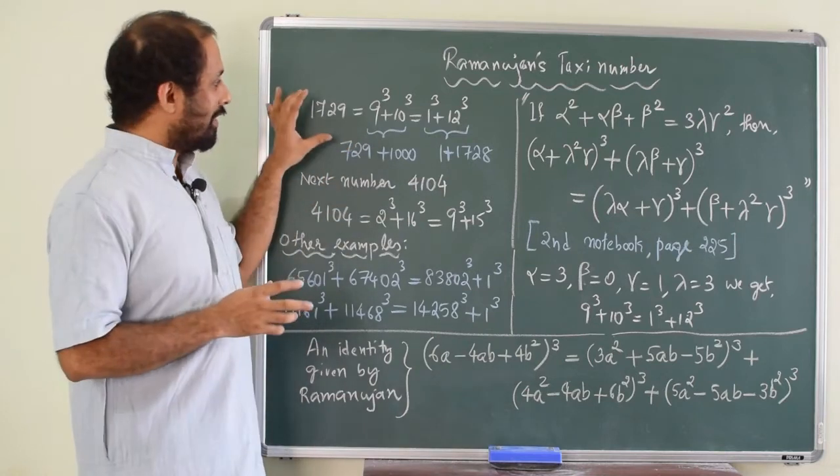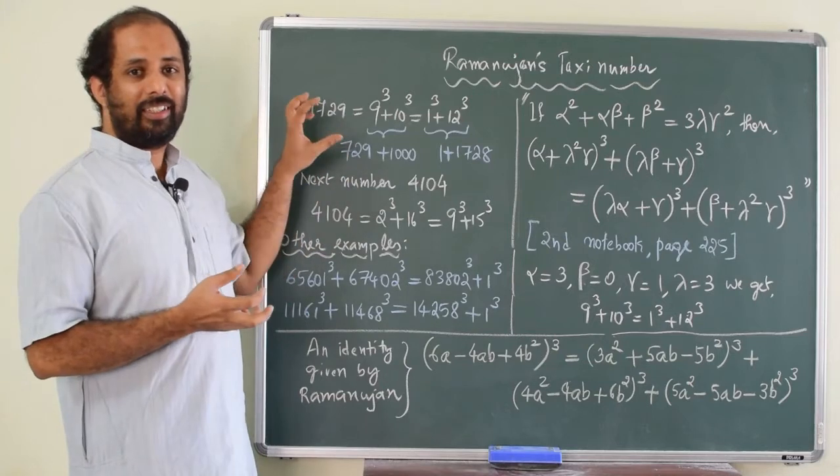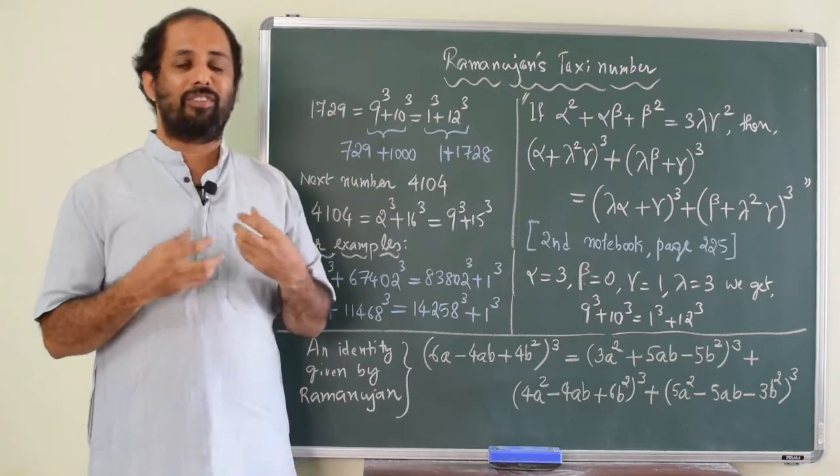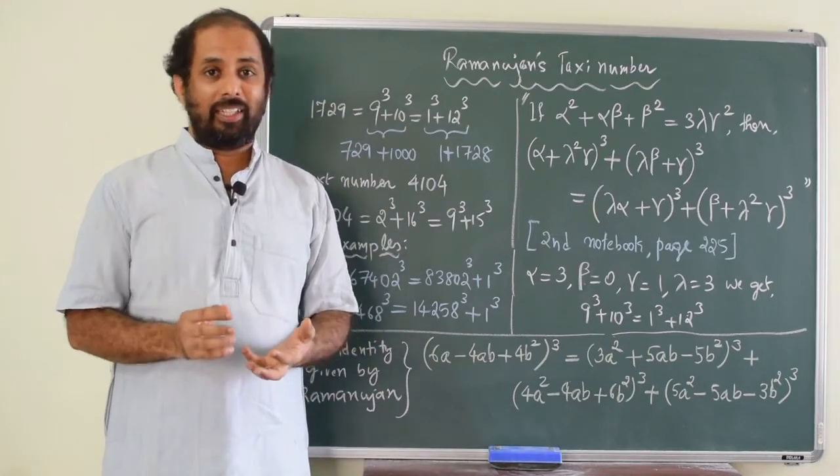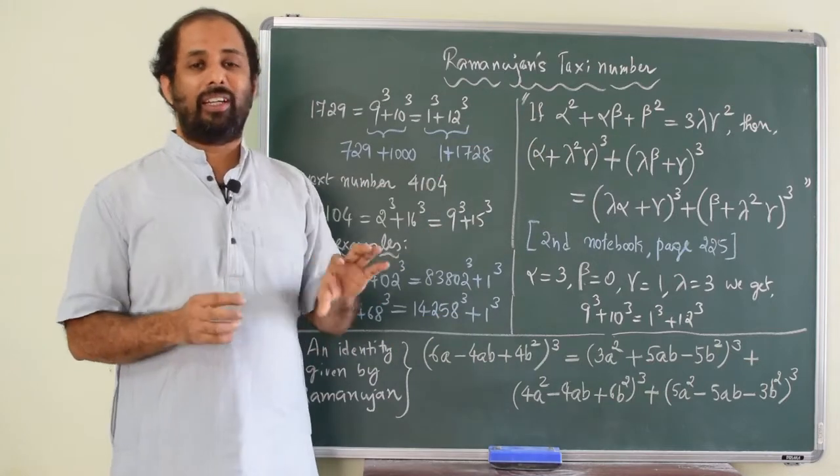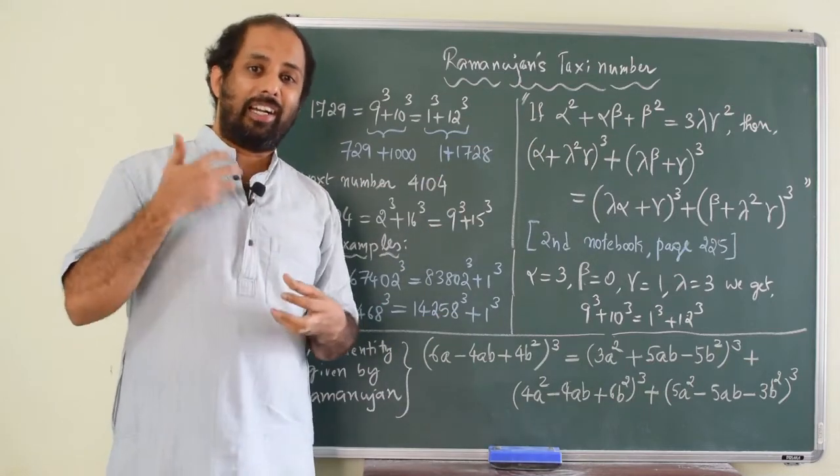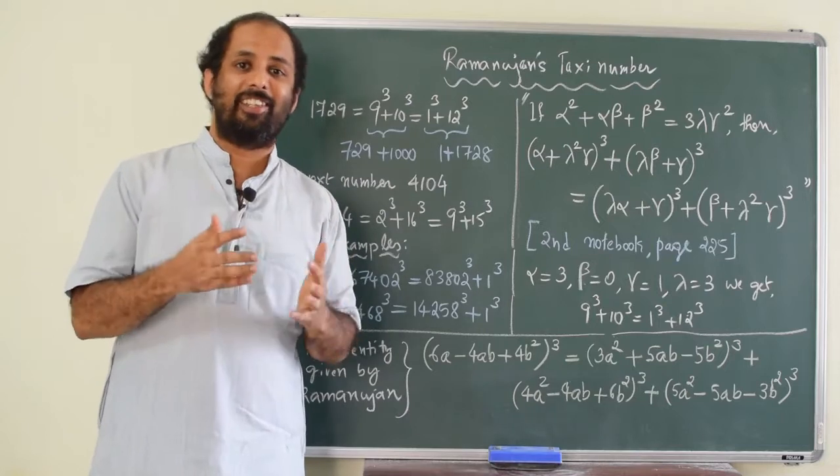So, he found this number. I mean, he narrated the speciality of this number when he was talking to Hardy. But, in fact, he had already found one formula to generate hundreds of such numbers. And that is the genius of Ramanujan.